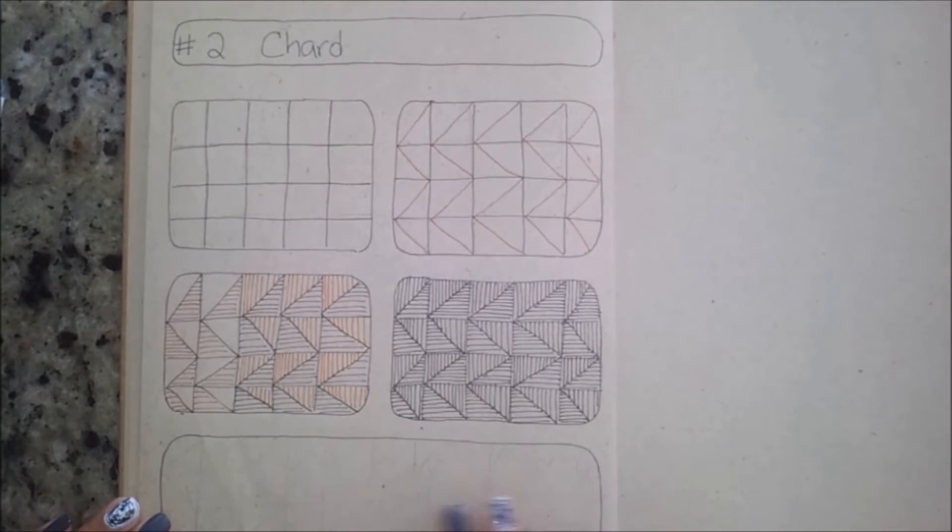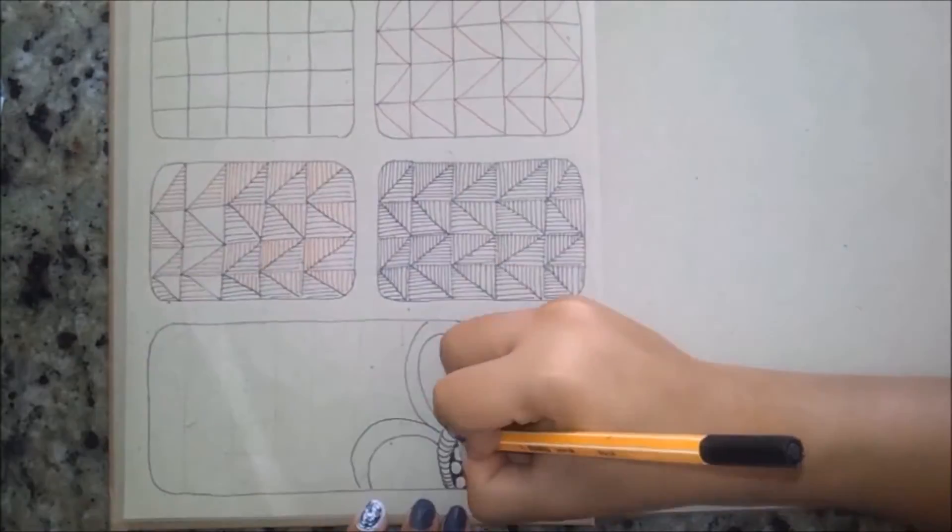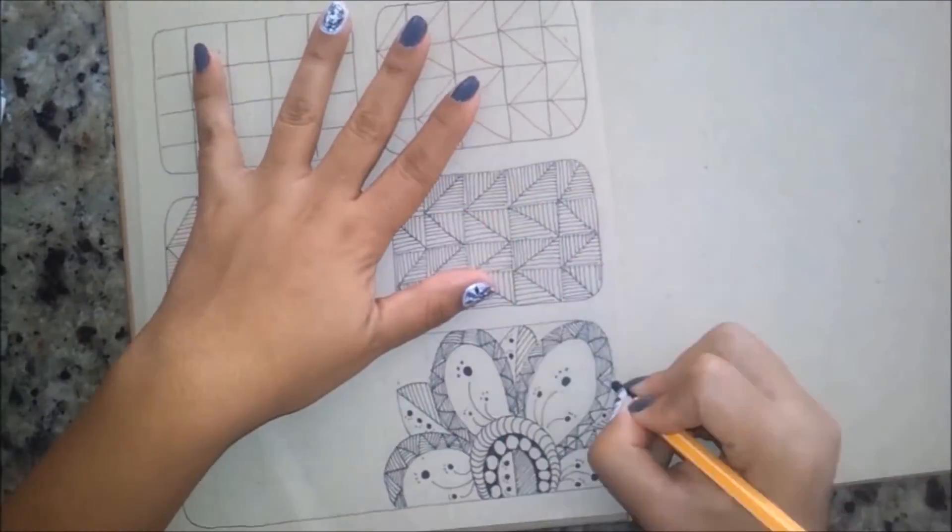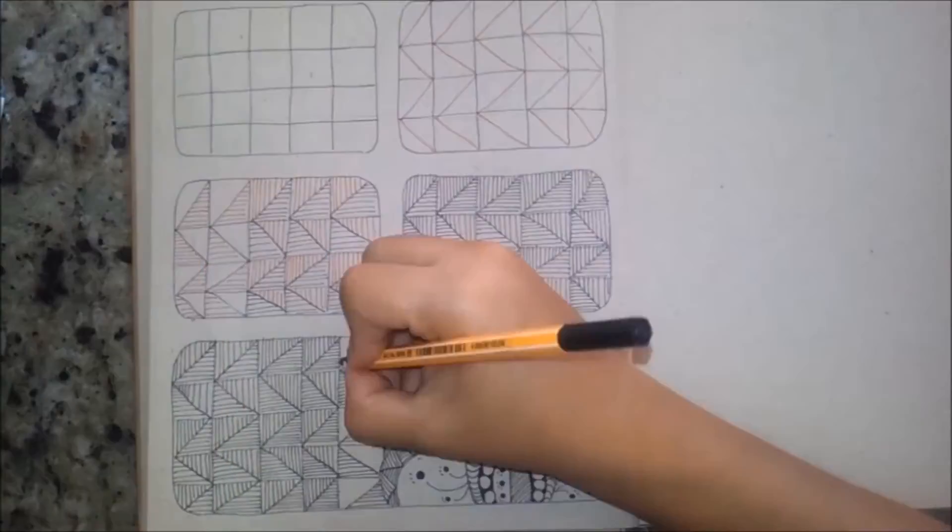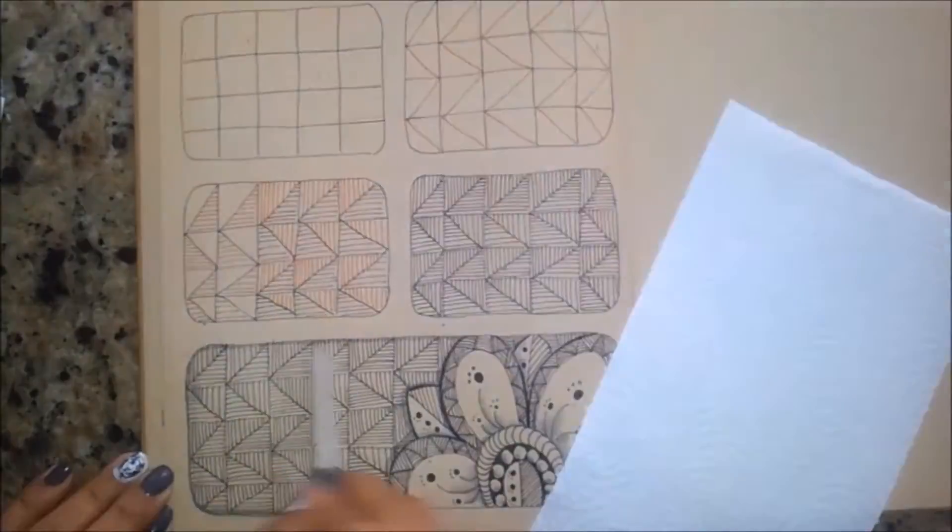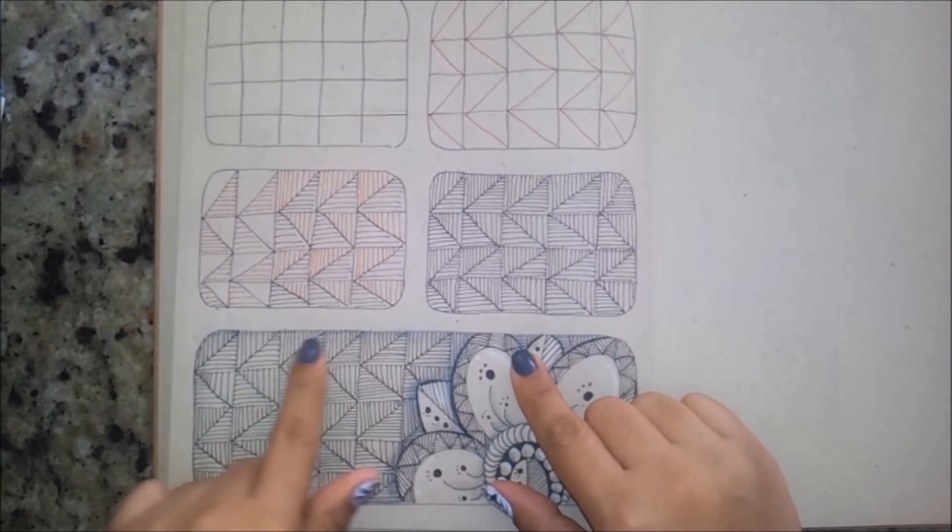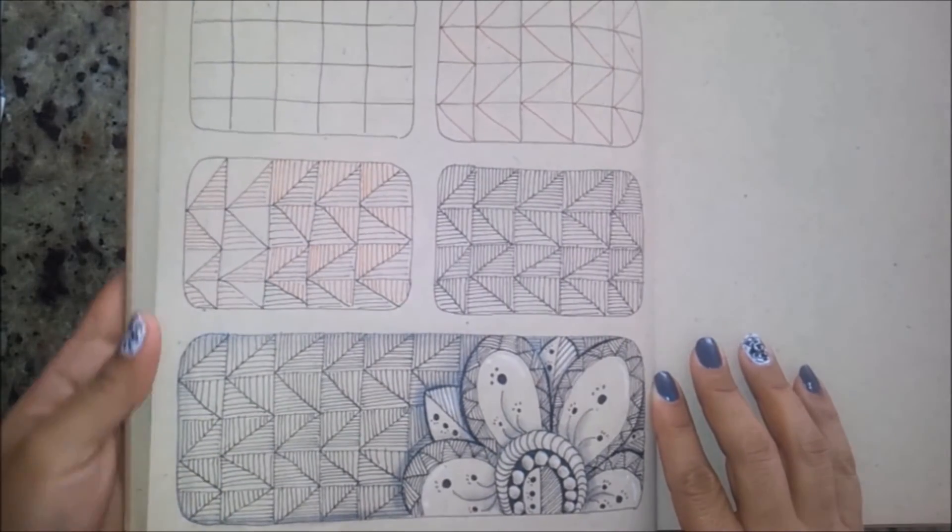Here I'm gonna make a drawing using this pattern, a simple Zentangle flower, and I'm using this pattern as a background. As you can see here, I'm gonna add a little bit of shading and lights using a graphite pencil and a white color pencil. And this is the result.